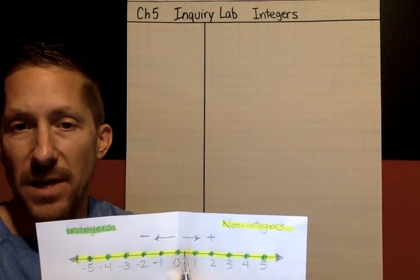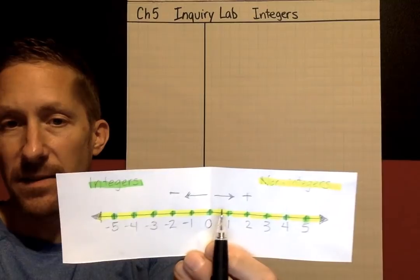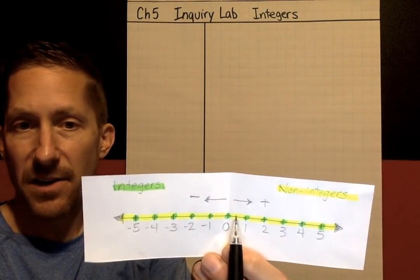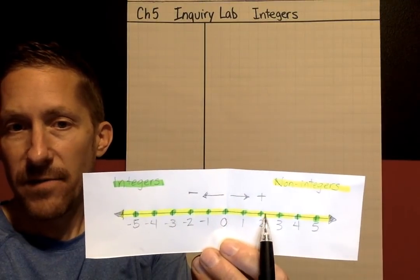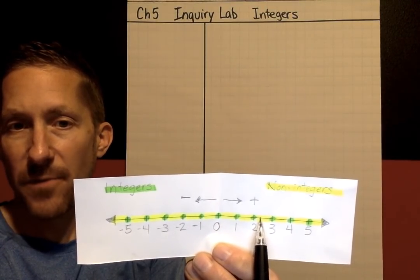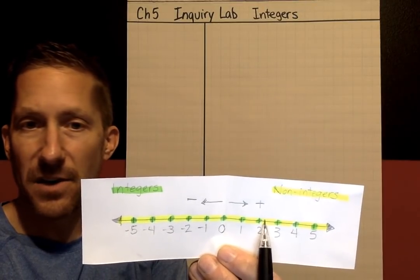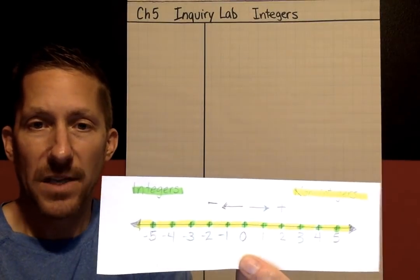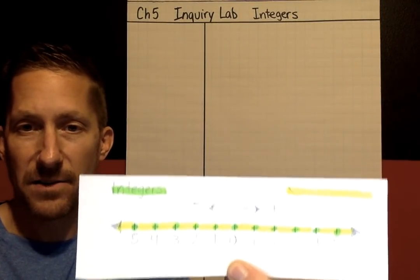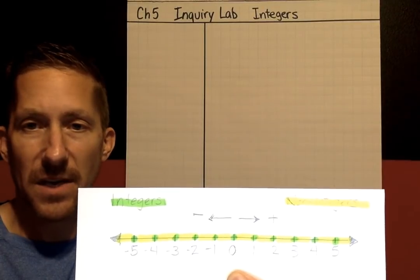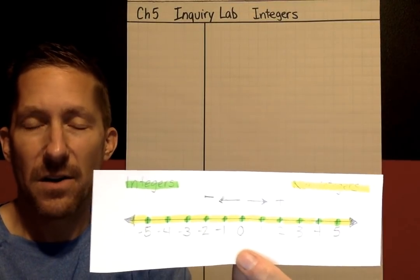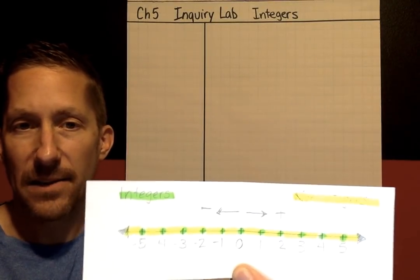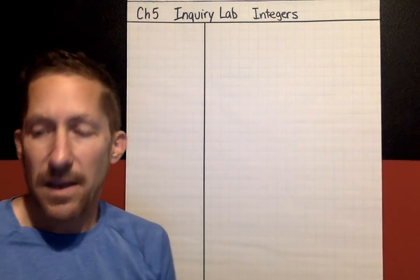What are the numbers in between? Right in the middle between zero and one would be a half or 0.5 — that's not an integer. Something like 2.25 or two and a fourth is not an integer either. Same thing on the negative side. It's only whole numbers — positive and negative — and zero. All the numbers in between, if there's a fraction part or a decimal part, it's not an integer. It would be yellow — non-integer.